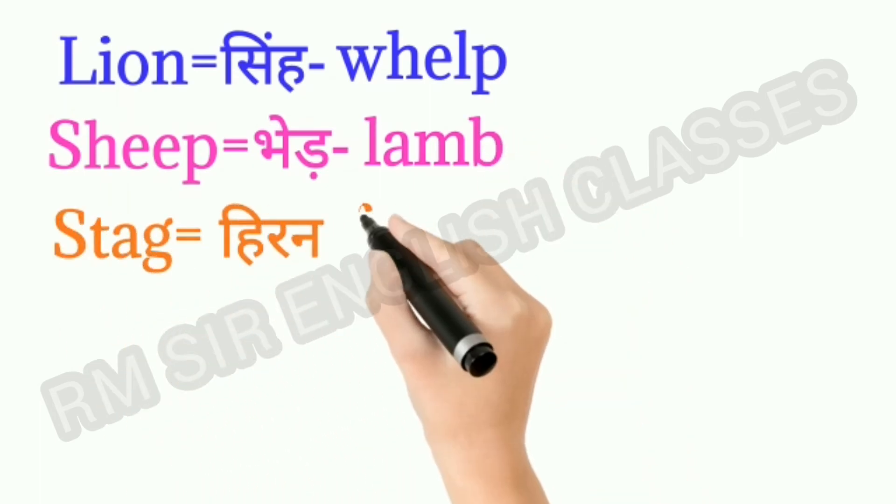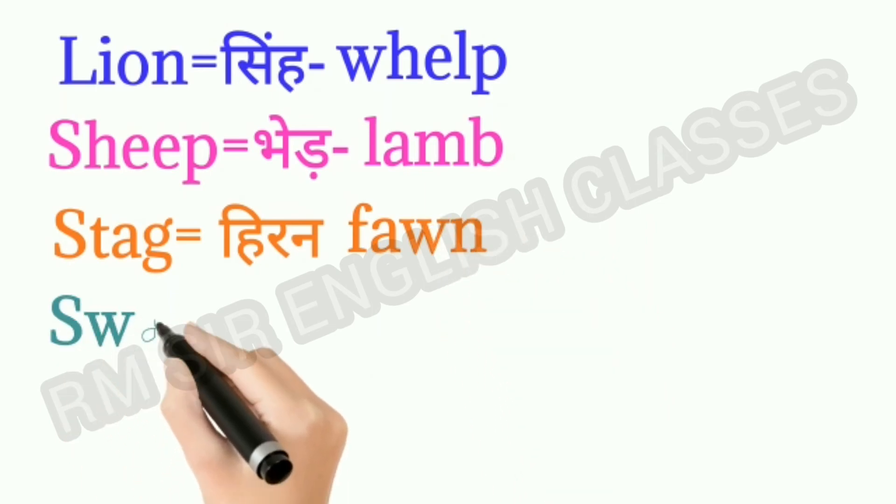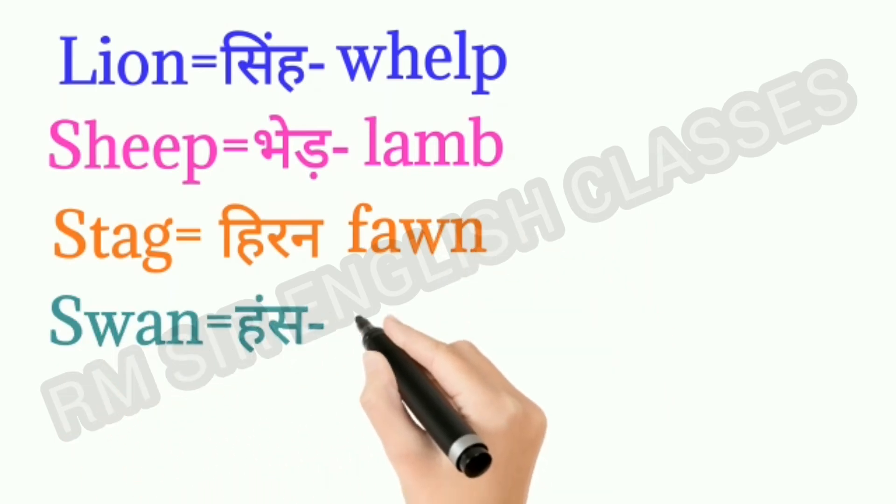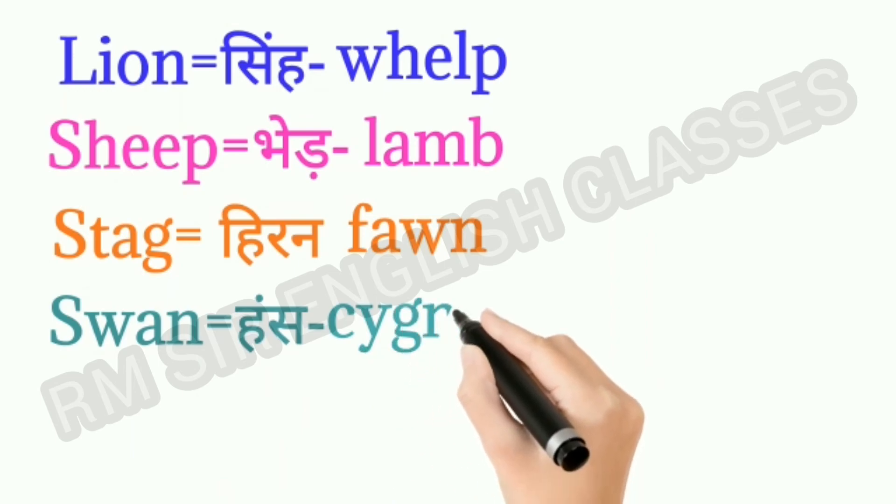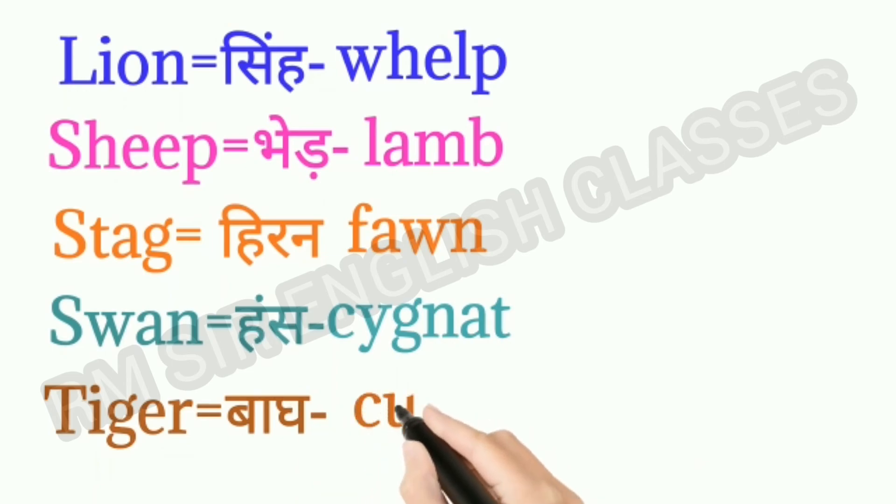Stag means harin or heron. Baby stag is called fawn. Swan means hans. Baby swan is called cygnet. Tiger means bagh. Baby tiger is called cub.